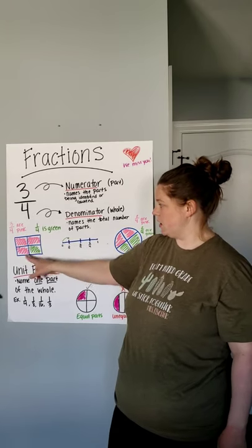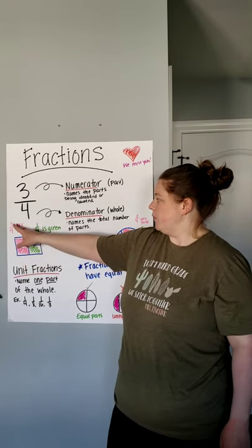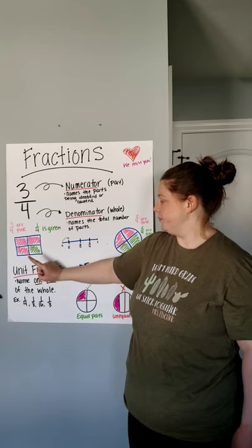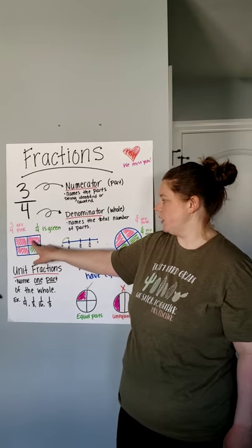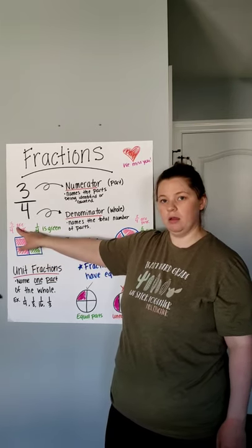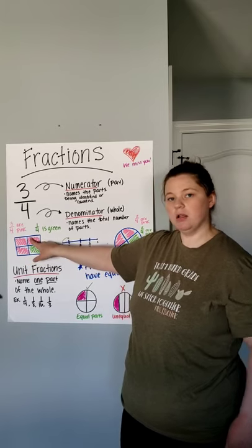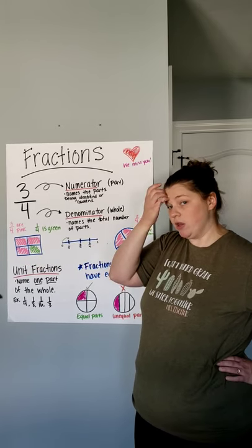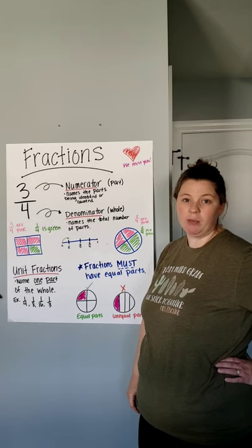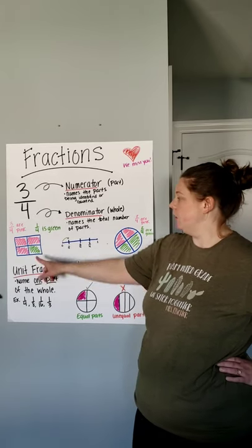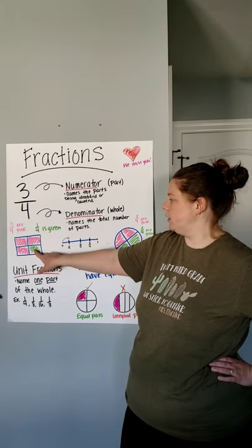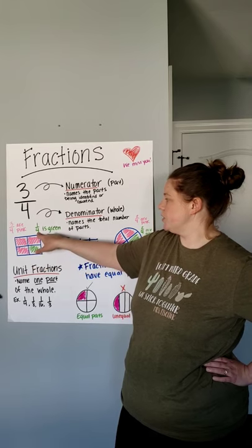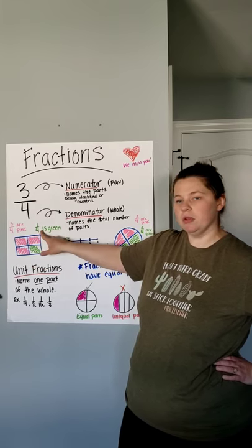So, like if you look at this square here, three-fourths are pink. So, we have one, two, three that are colored in pink out of the four total. And then we can do the same thing to figure out how many are green. Which fraction is shaded green? There's only one green out of all four total. So, one-fourth is green.